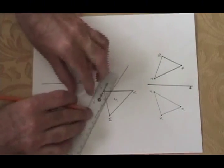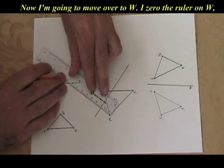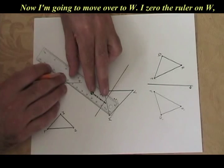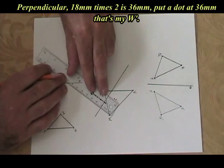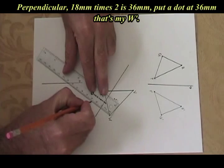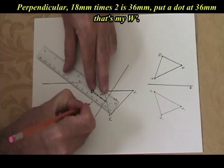Now I'm going to move over to W. Zero it. Perpendicular, 18 millimeters times 2 is 36. Put a dot at 36. That's my W'.